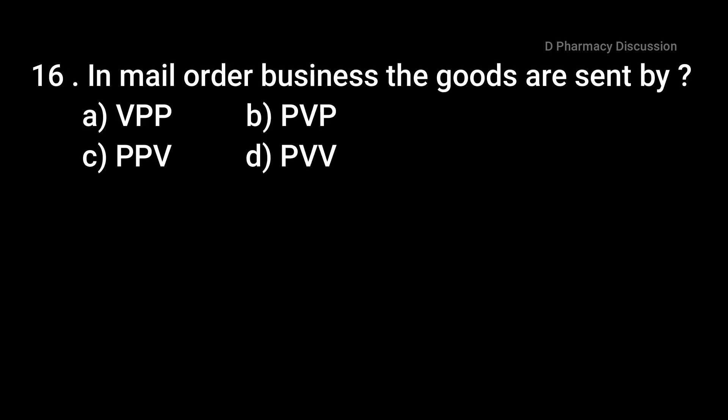Next question: in mail order business, the goods are sent by — options are option A: VPP, B: PVP, option C: PPV, and option D: PVV. The correct answer is option A, VPP. In mail order business, generally the goods are sent through VPP, that is value payable post. There is no danger of bad debt since the price of the goods is received either in advance or collected from the post office when goods are sent by VPP.